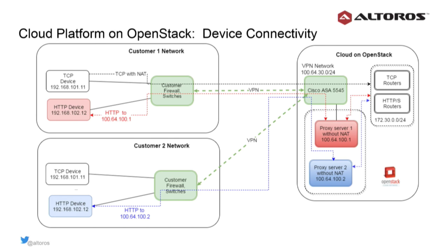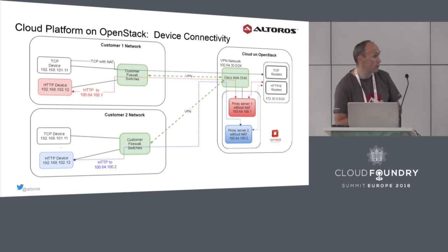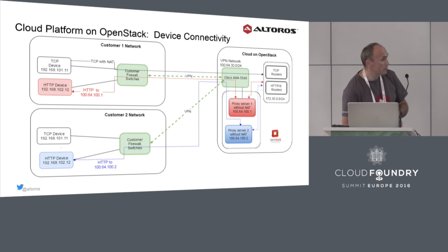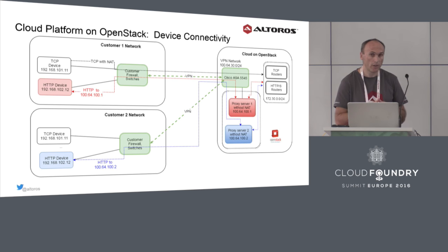We evaluated more expensive solutions like Cisco Application Centric Infrastructure but found they didn't work as expected. As the implementation for proxy servers, we use open source Nginx, which can run on OpenStack or VMware ESXi. In our case, to provide HA, we run the proxy servers inside OpenStack.